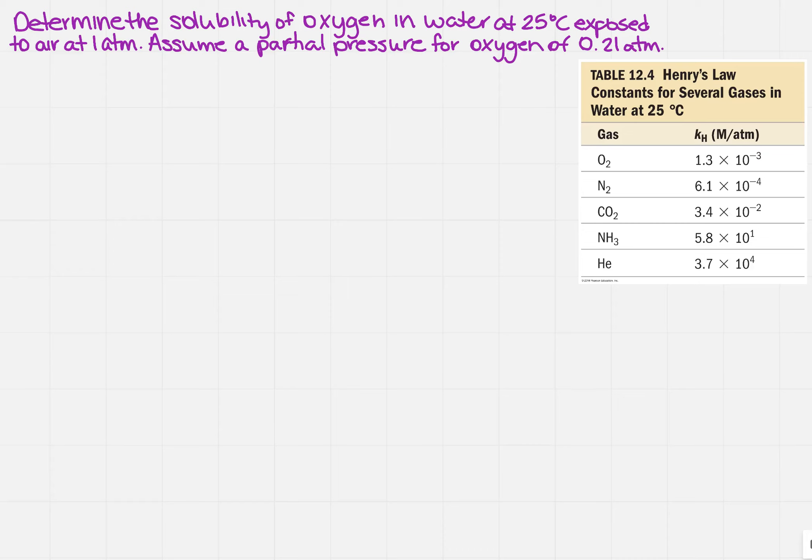I want to determine the solubility of oxygen in water at 25 degrees Celsius exposed to air at one atmosphere. I've also been told that I can assume that the partial pressure for oxygen is 0.21 atmospheres. So where am I going to start?